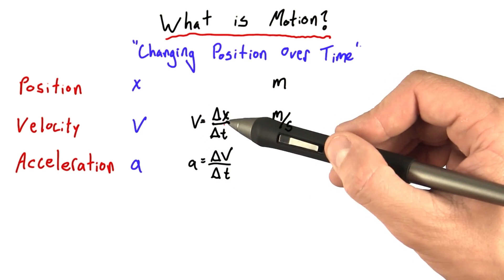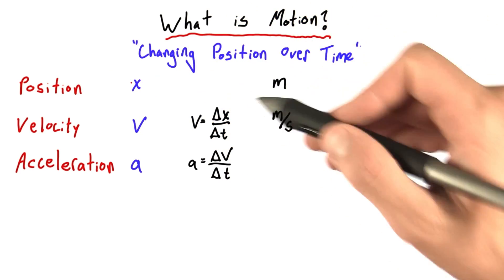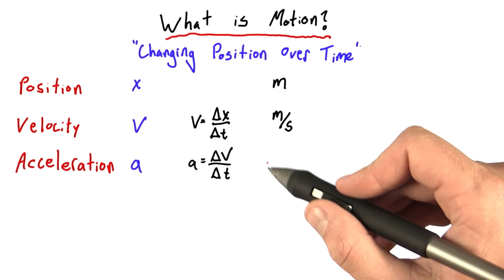So for example, velocity is defined in terms of a change in position. We've given units to position and velocity. We'll get there for acceleration.